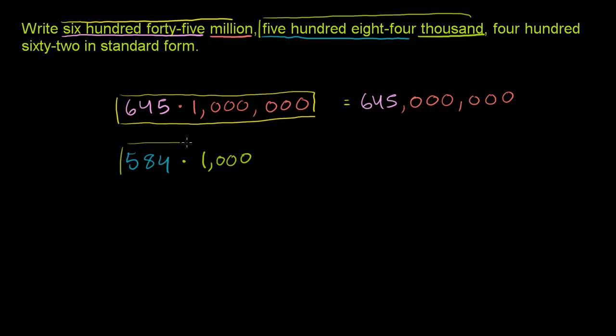Well, it's 584 with three zeros behind it. You could view it as 584 times 1, and then you have three zeros in the final answer. So it's 584,000. You have the three zeros at the end. That's that part.